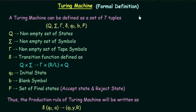If you remember the formal definition of Turing Machines, the only difference in non-deterministic Turing Machines will be in the transition function. For deterministic Turing Machines, the transition function says that a particular state on getting a particular input will go to another state, writing some symbol on the tape and moving either right or left — meaning it will go to only one state. This is what will be different in non-deterministic Turing Machines.